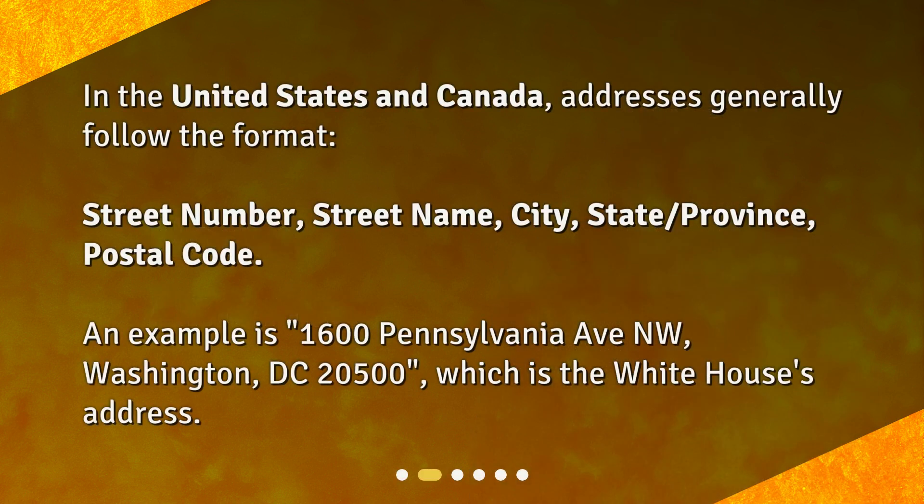North America. In the United States and Canada, addresses generally follow the format: street number, street name, city, state or province, postal code. An example is 1600 Pennsylvania Avenue Northwest, Washington, District of Columbia, 20500, which is the White House's address.